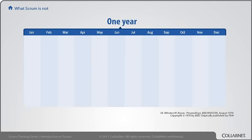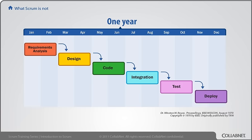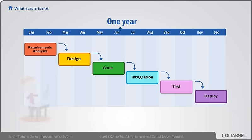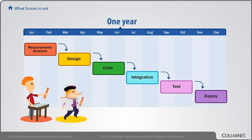Here's what Scrum is not. The attempt to use traditional Gantt ideas for developing software was first described by Dr. Winston Royce in 1970. He drew a picture showing a series of phases — one phase connects to the next, and each one has a handoff.